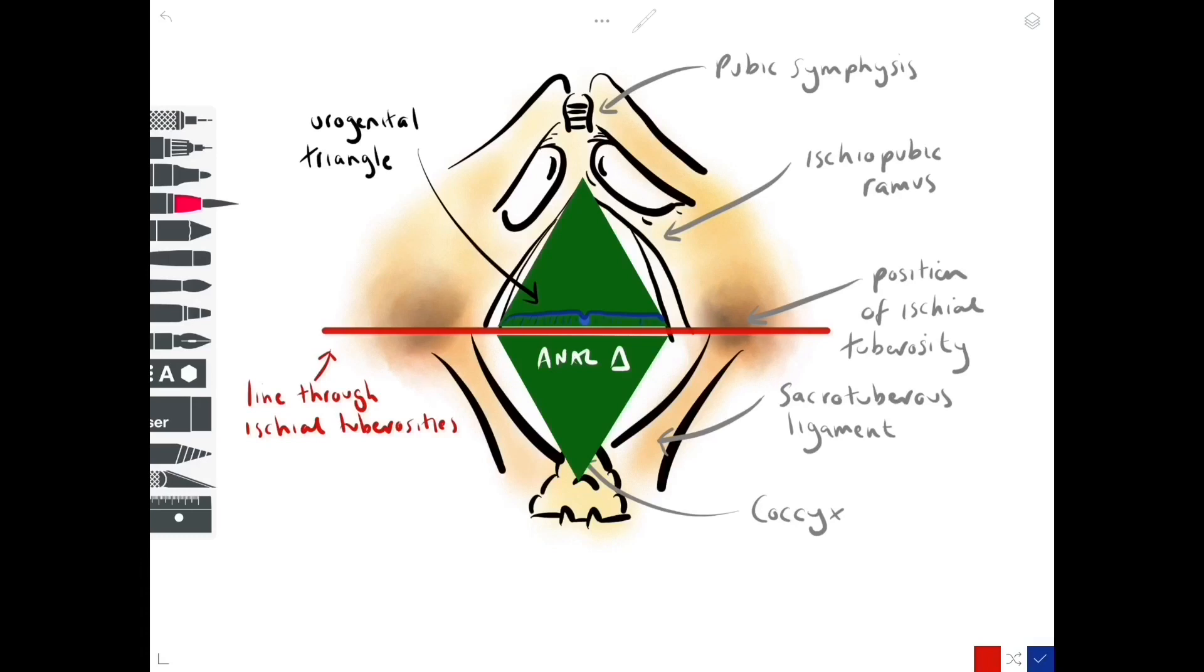We're interested in the deep perineal pouch, which lies the other side of the perineal membrane closer to the pelvic floor. We've got a perineal body in the middle in light blue, and running along to join with it is a deep transverse perineal muscle. This is the same as the superficial transverse perineal muscle in the superficial pouch, only at a deeper level.